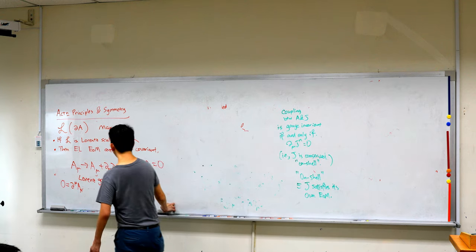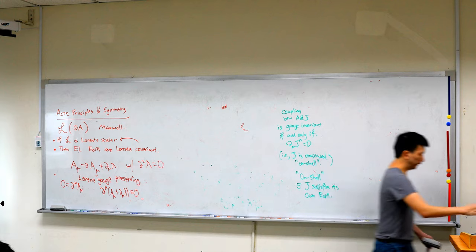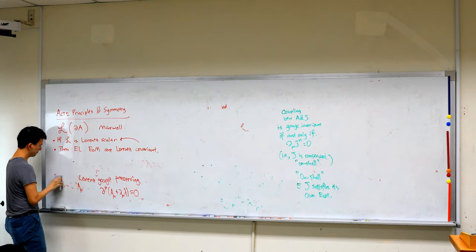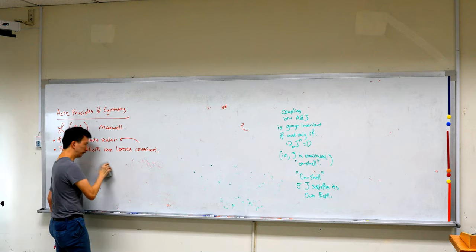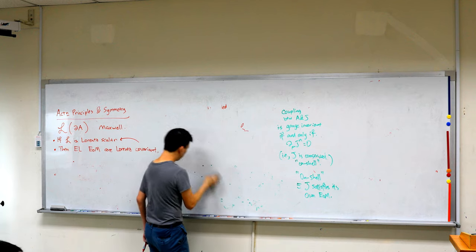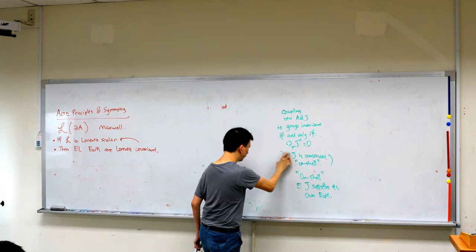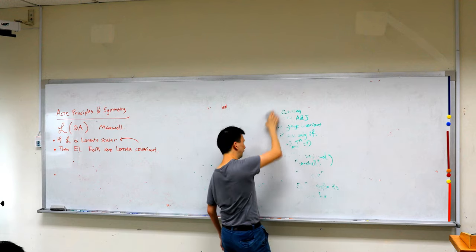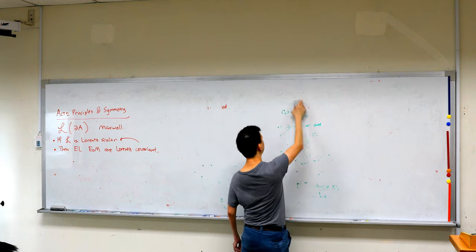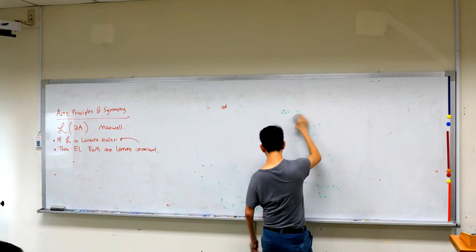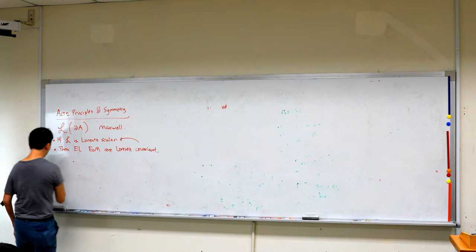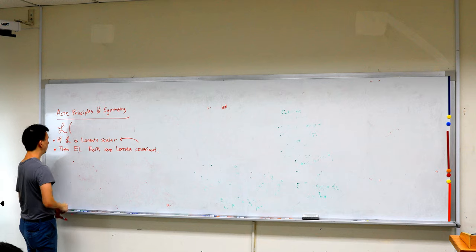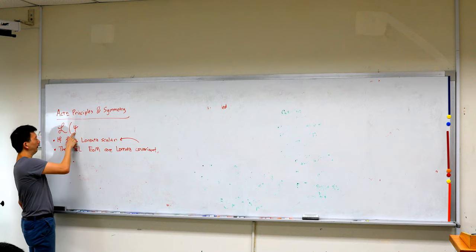Now let's do the Dirac equation. The symmetry is extremely important — if there's anything you learn from this course, it's that symmetry is extremely important. If someone asks you what is quantum field theory, the answer is symmetry. The Dirac case depends on the four-component Dirac spinor psi and its first derivative.